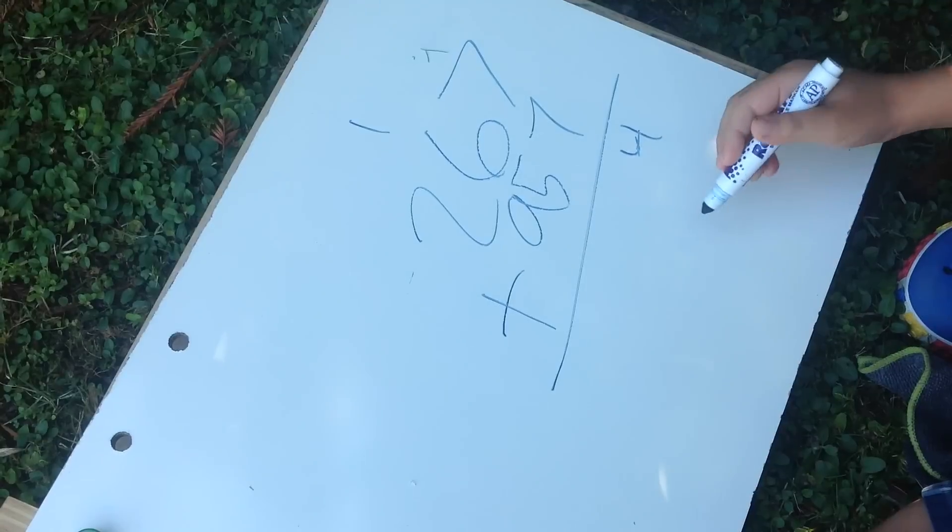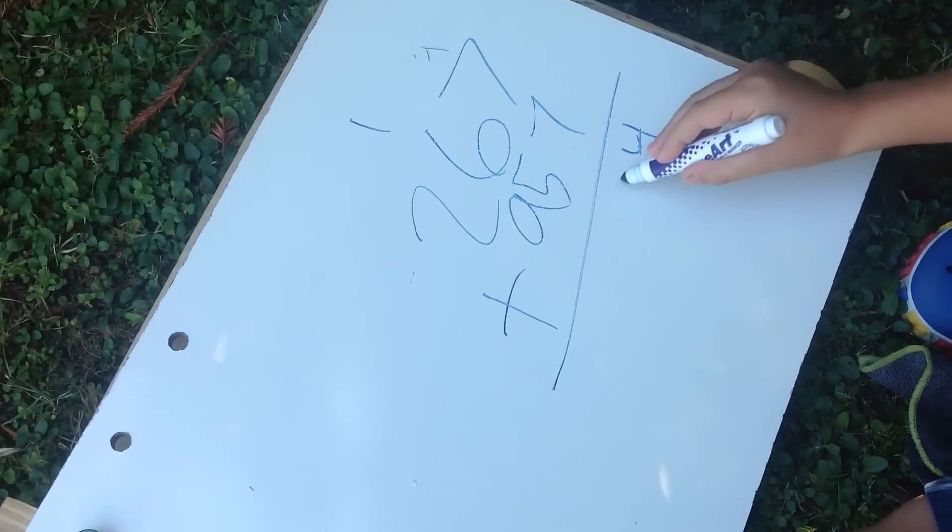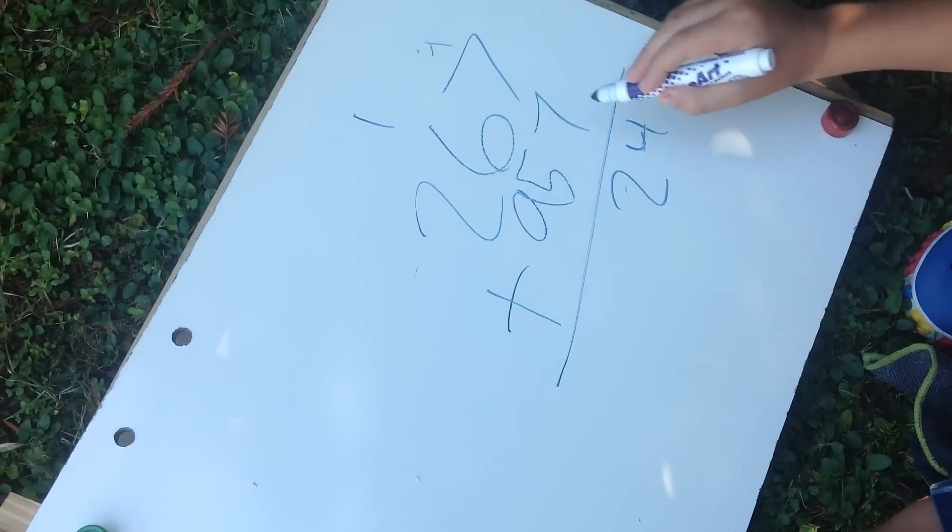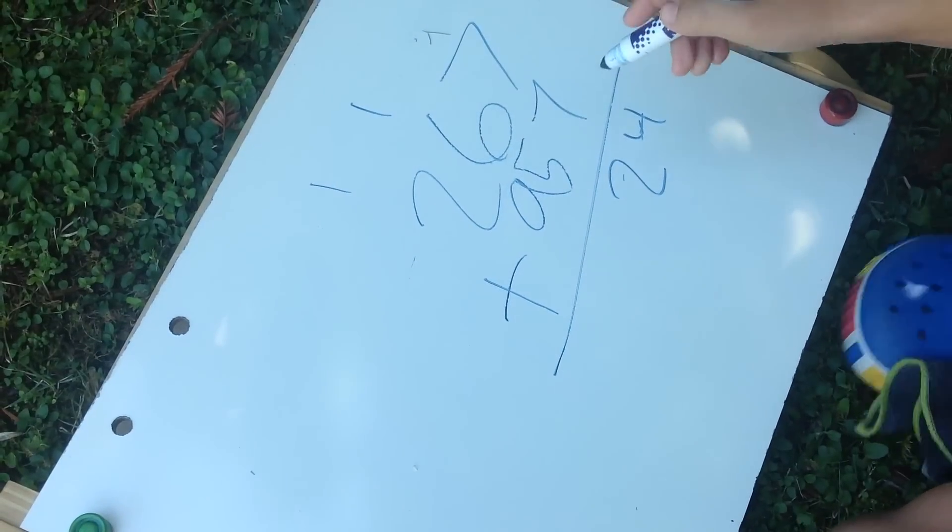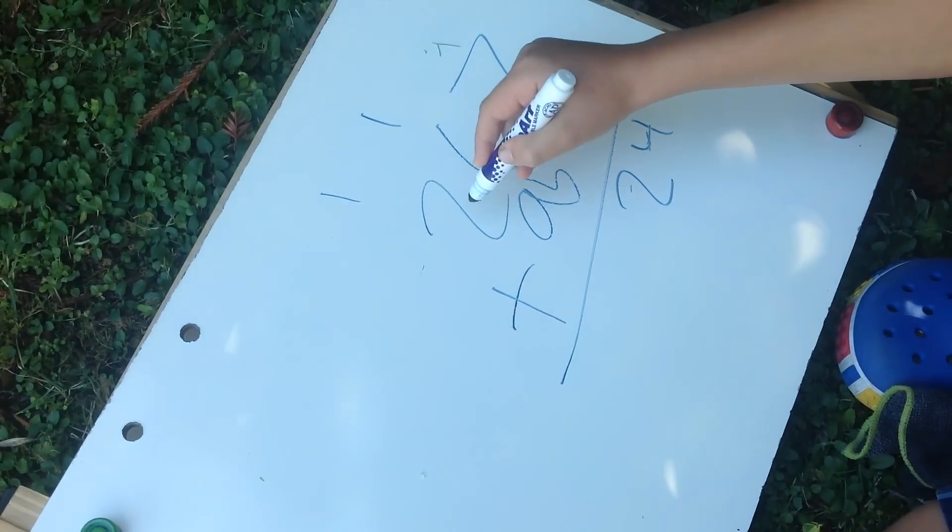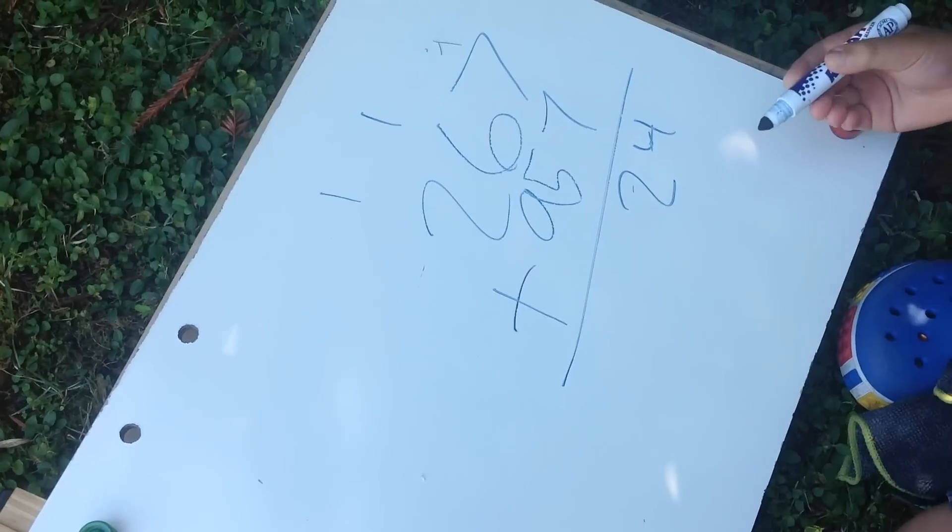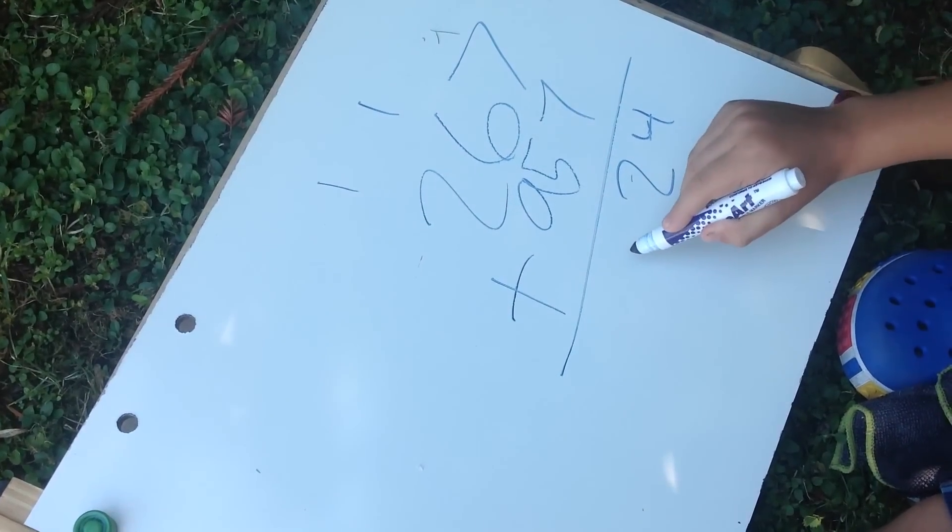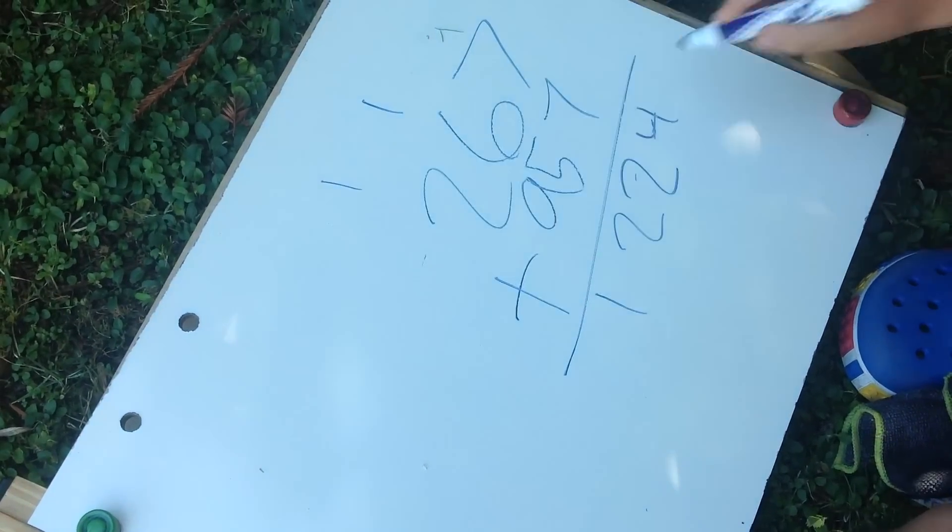And 1 plus 6 plus 5 is 12, and you do the same thing here. You put the 2 here and the 1 here, and then 1 plus 2 plus 9 is also 12. So you take the 2 and the 1 since there's no room here.